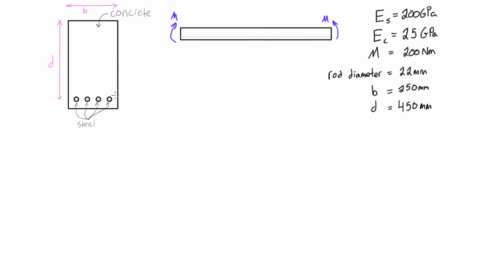After we transform the steel, we're going to calculate the max stress that develops in the concrete, which is going to be compressive stress, and then the max stress that develops in the steel, which is going to be our tensile stress. To get started, first we need our ratio N, which is ES over EC. We're going to be transforming the steel rods into an equivalent area with a modulus of elasticity that matches the concrete, so that's 200 over 25.